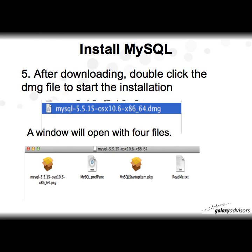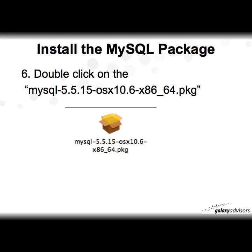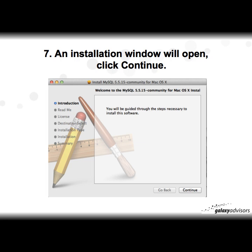Next is to install MySQL. After you've downloaded it, double-click the DMG file to start the installation. In my example I have the 64-bit DMG; you may have the 32-bit. A window will open with four files. You want to install the MySQL package, so double-click on the MySQL package — yours might be 32-bit versus my 64-bit illustration.